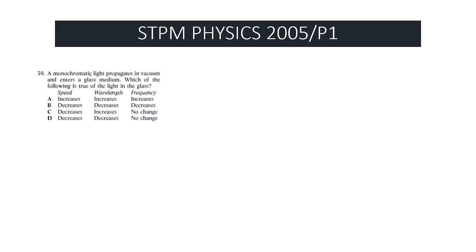Question 39: Monochromatic light propagates in vacuum and enters a glass medium. Using v = fλ, we know the frequency of light remains constant — so only wavelength and speed change. Both wavelength λ decreases and speed v decreases when entering glass. The correct answer is D.